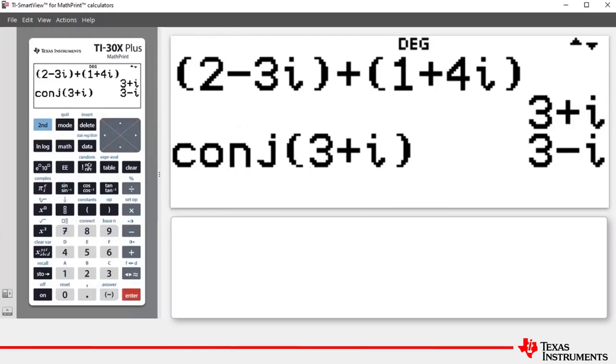In an earlier lesson in this series, you will have learned how to store, recall, and work with defined variables. So what we're going to do now is store two minus three i as a and store one plus four i as b, and then perform three calculations involving those stored complex numbers.